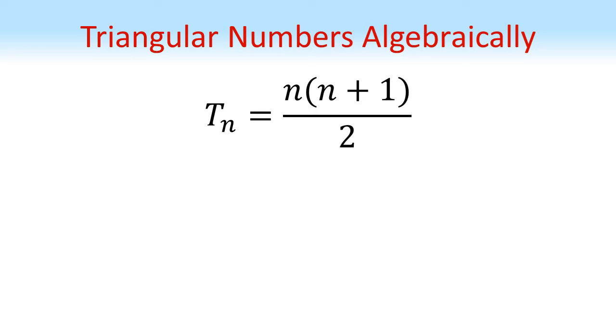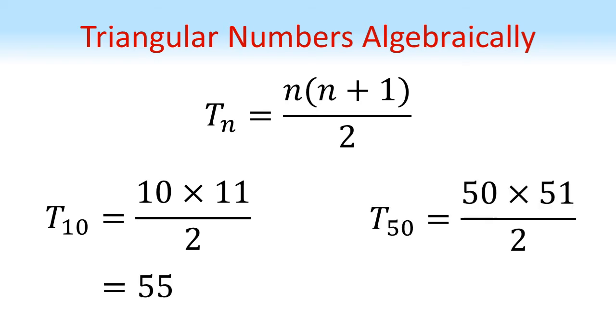Now we've got our formula for finding triangular numbers we can use it to find different terms in the sequence. So for example the 10th term is equal to 10 times 11 divided by 2 which is 55. The 50th term would be 50 times 51 over 2 which equals 1,275. We can use this formula to find any number in the sequence that we like.